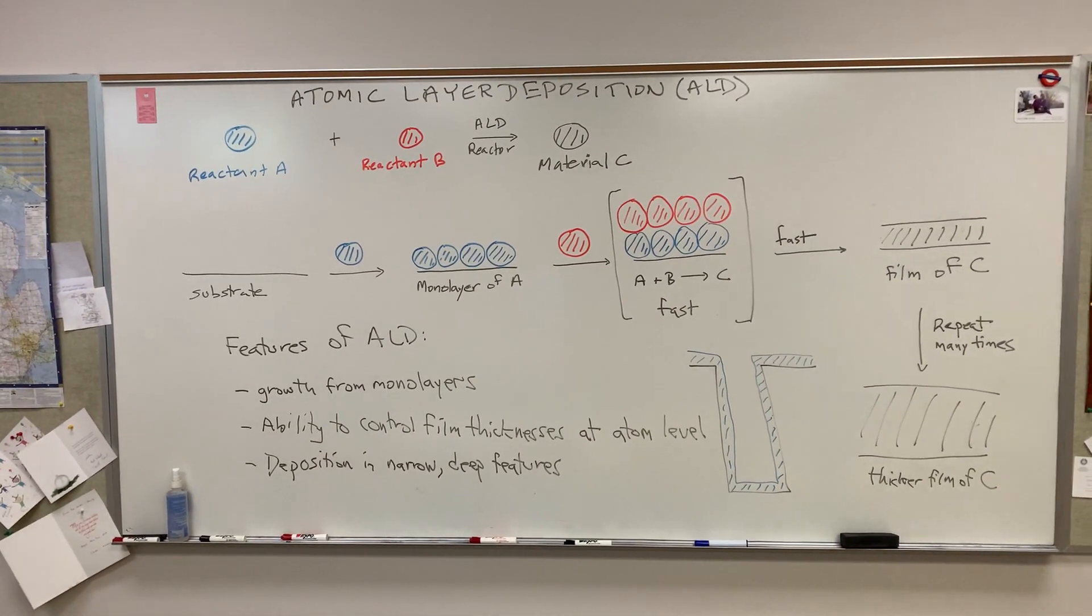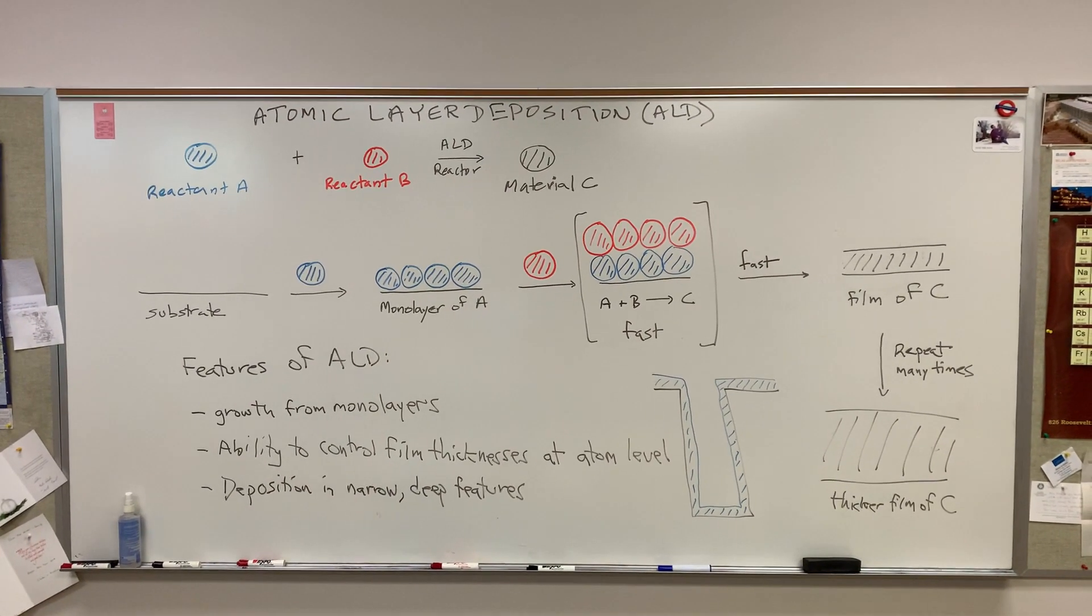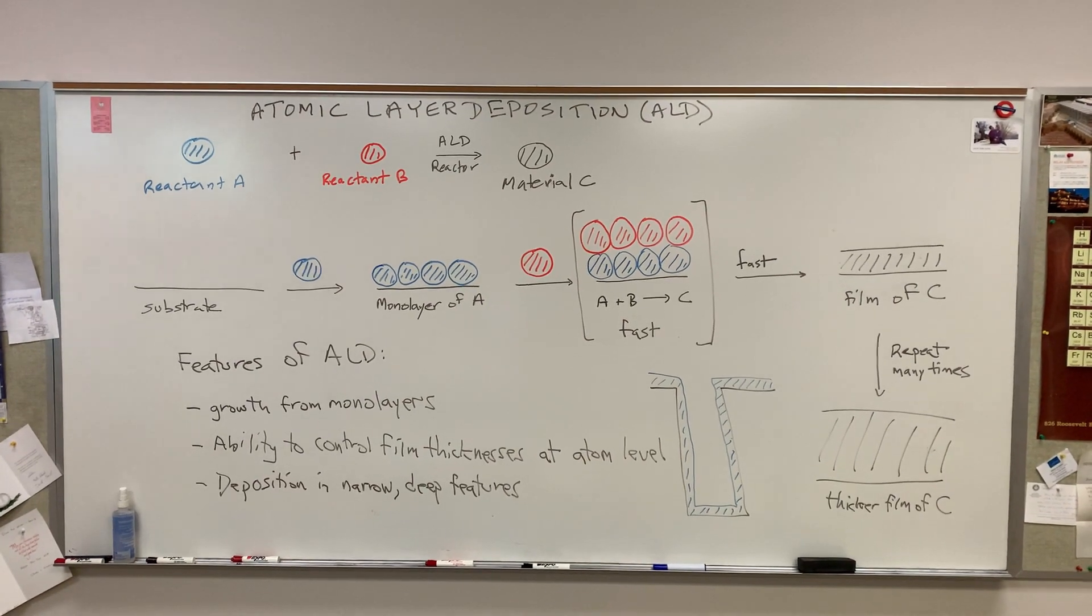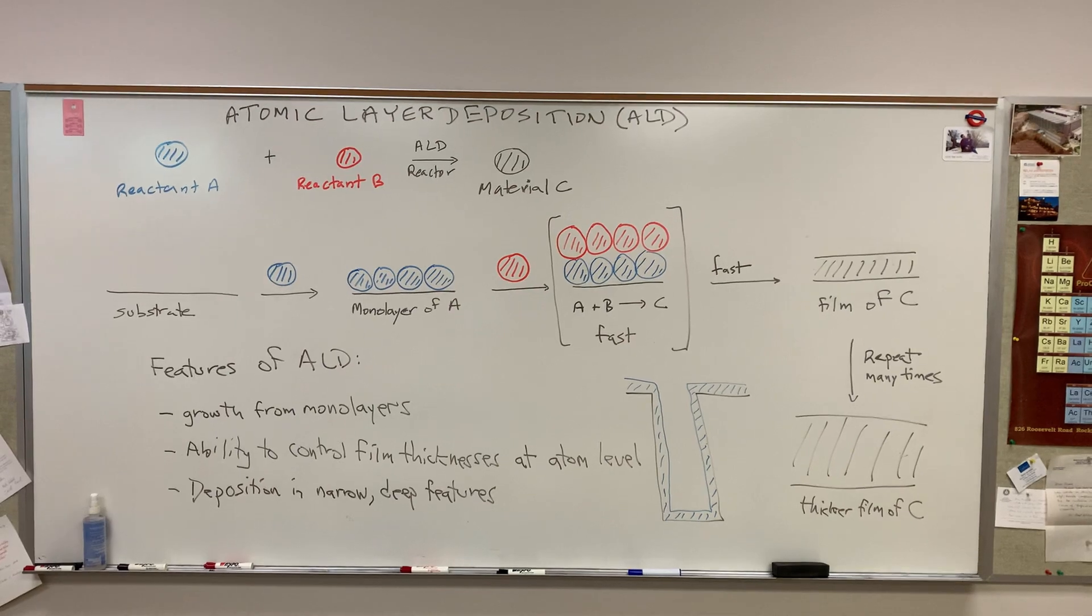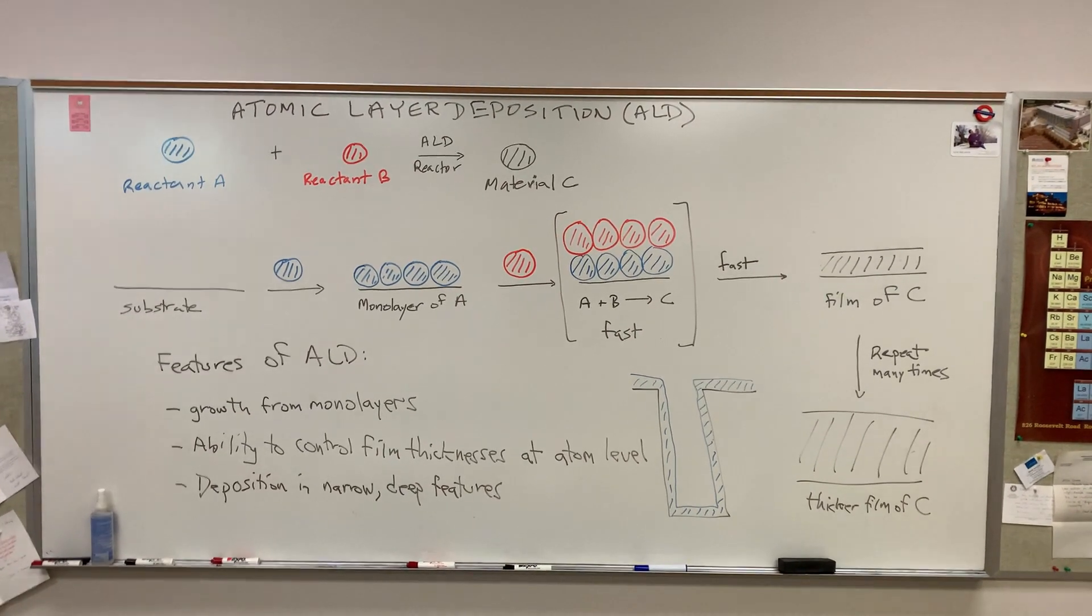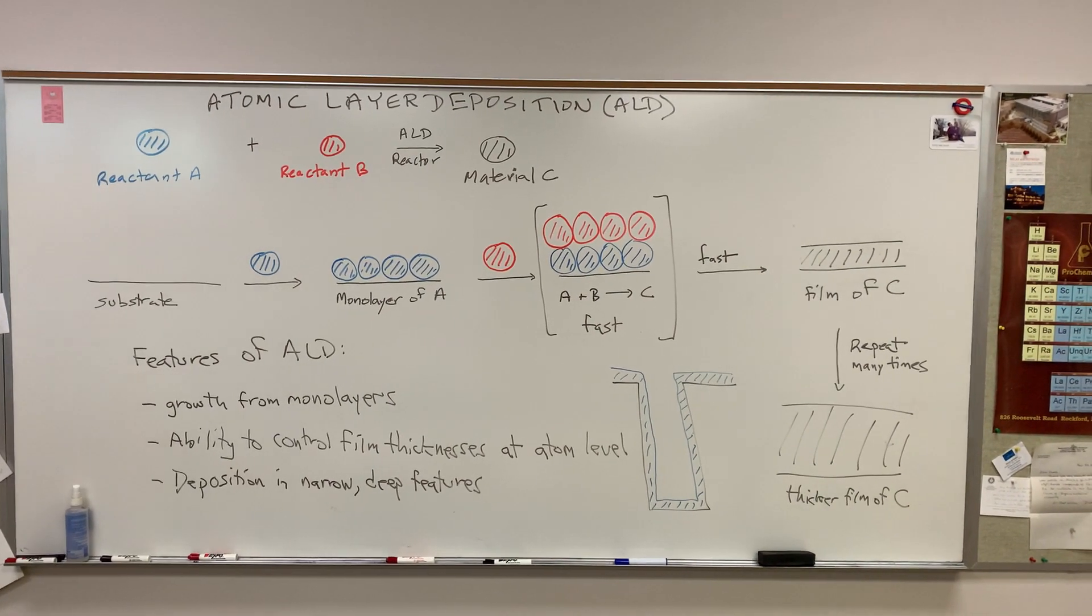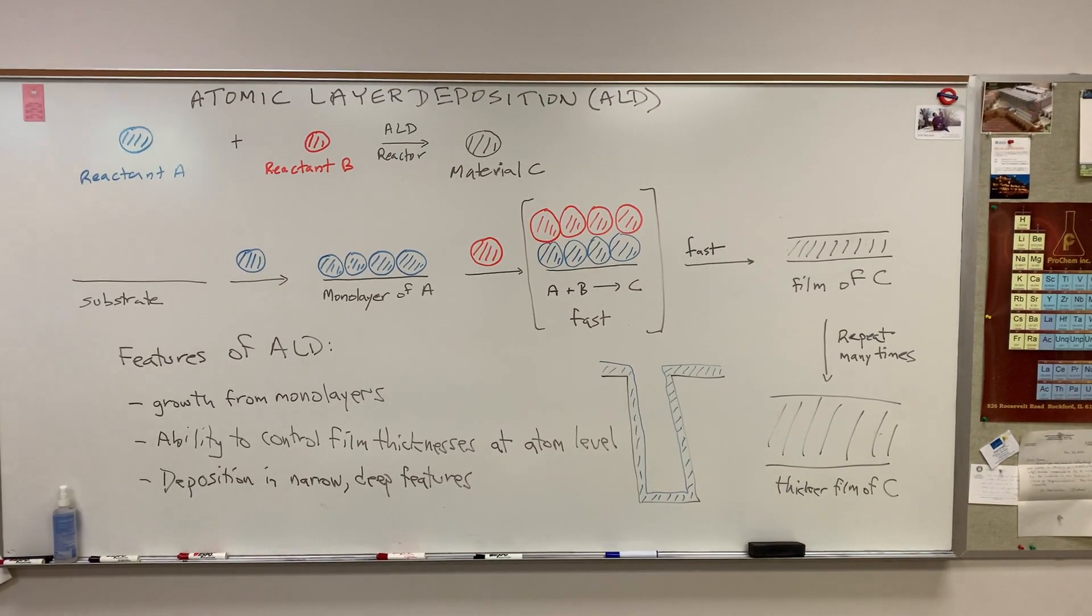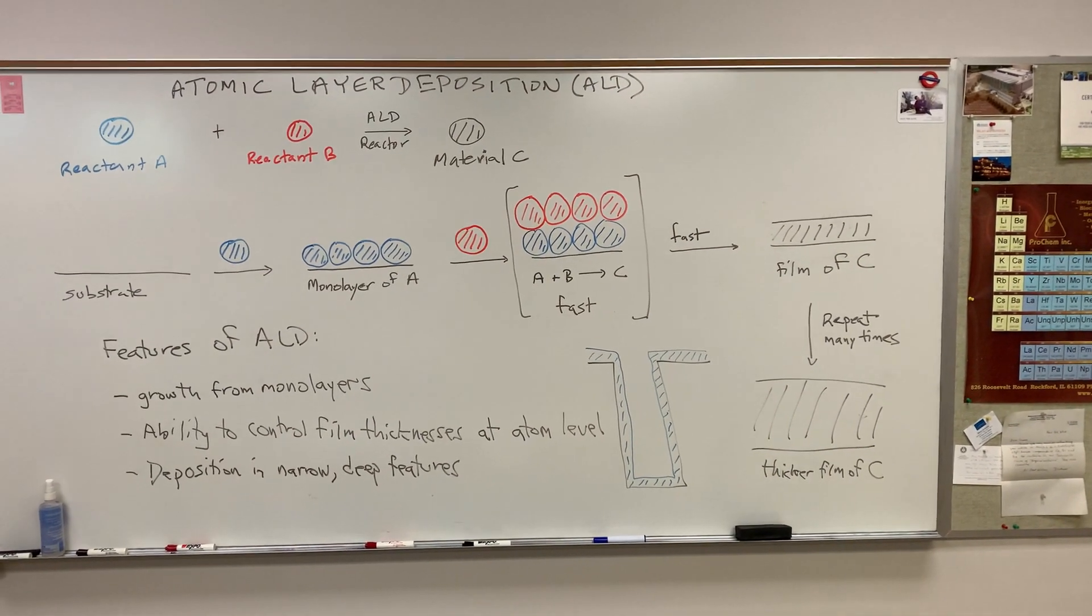And then this monolayer in a subsequent step is treated with reactant B, which is designed to react with reactant A to give material C. So the reactant B forms a monolayer on top of the monolayer of A, and these then react rapidly together chemically to give a film of C, which is shown on the right.